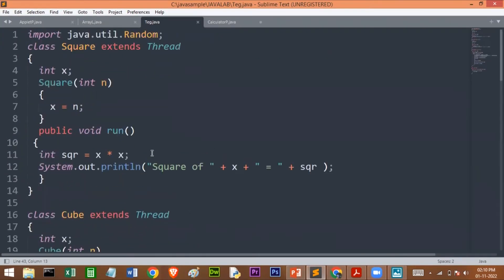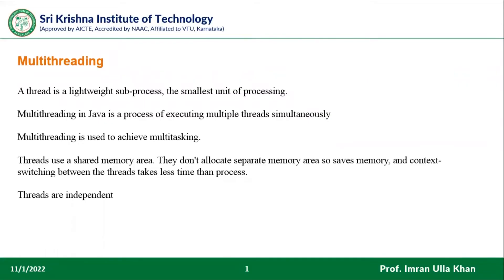Before going to the explanation of the code, I'll quickly brief about what is the Thread class and why we need multi-threading. A thread is a lightweight sub-process and the smallest unit of processing. Thread is a predefined class in Java available in the java.lang package. It is a basic unit of CPU and well known for its independent execution. Multi-threading in Java is a process of executing multiple threads simultaneously.